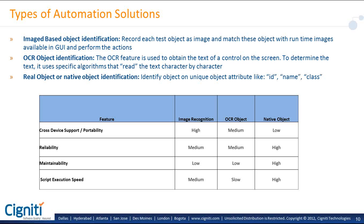OCR-based tools are slow because they have to capture the image, compare it, read the text, and then perform the action. The other type is native object-based tools, which identify objects based on their properties. To allow this, the tools must have access to the native APIs of the device.